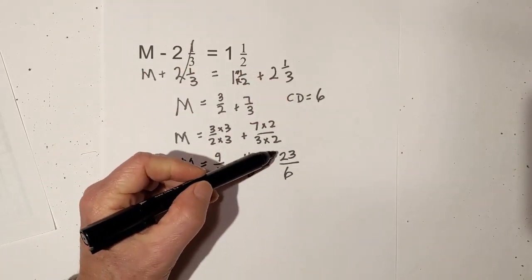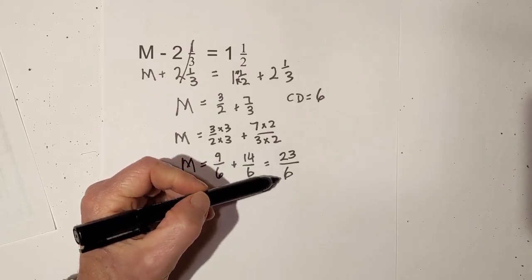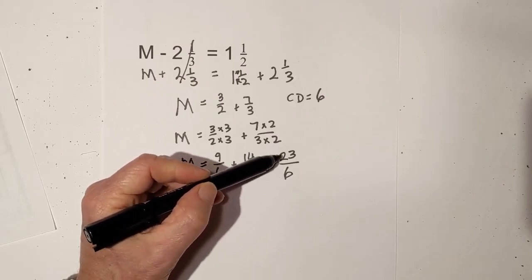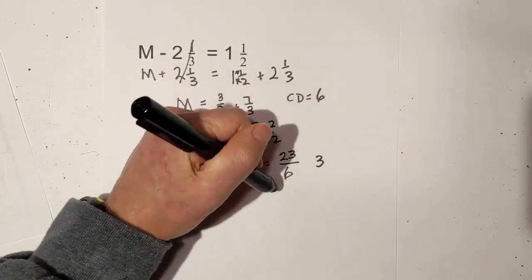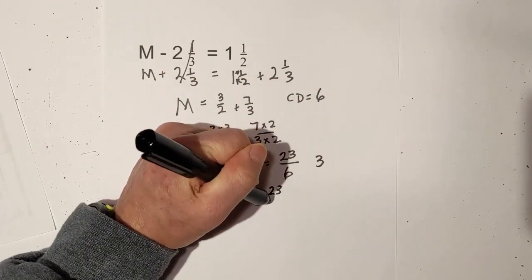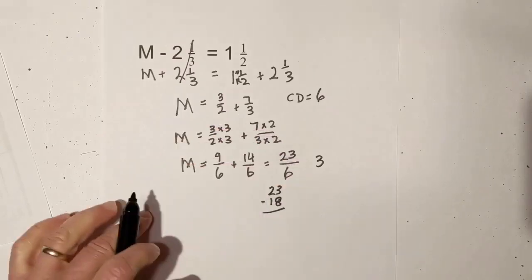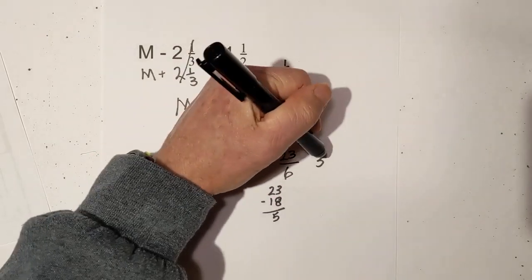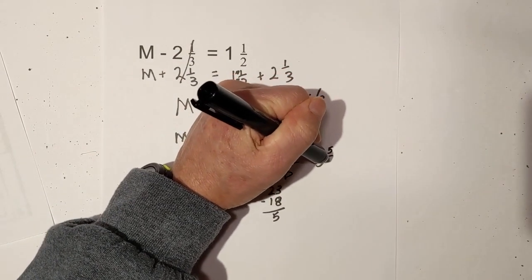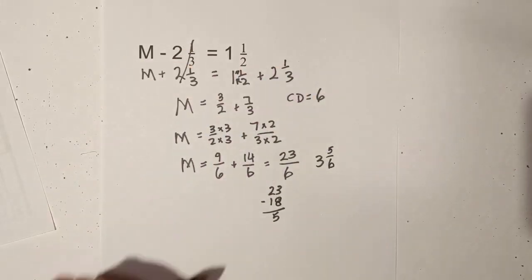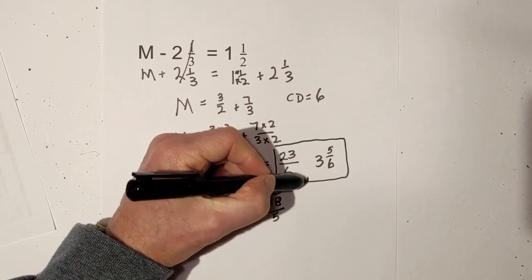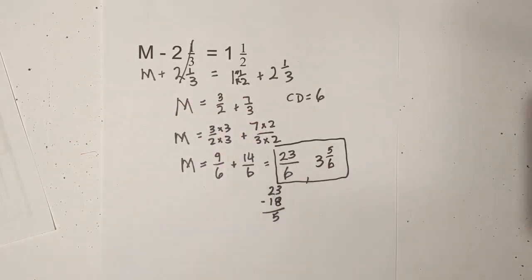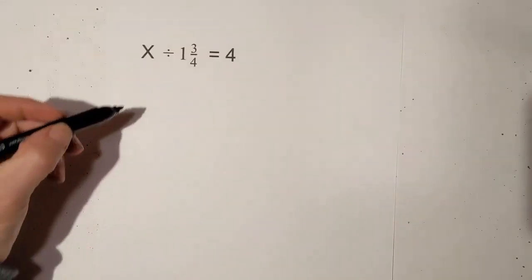If you would like, you can convert it. 6 into 23 goes 3 times, that's 18, and then 23 minus 18 equals 5, so it is 3 and 5 sixths if you would like. Both of these are correct. With this next problem, we have division.